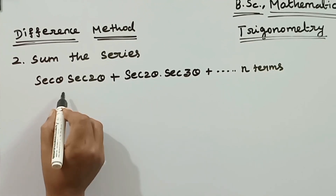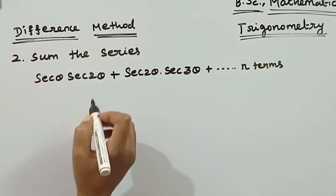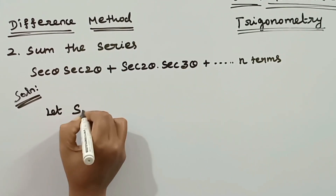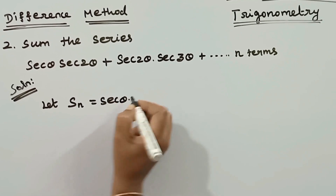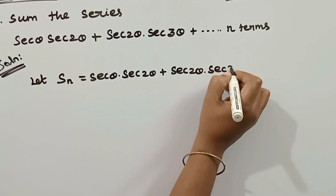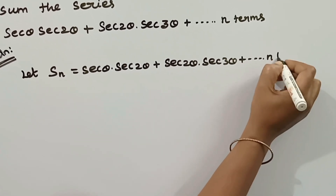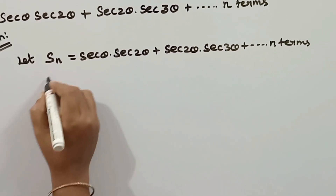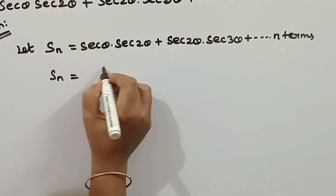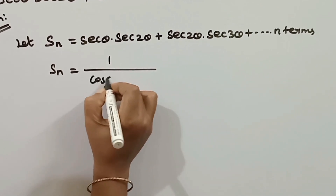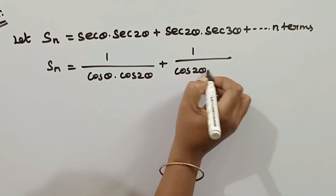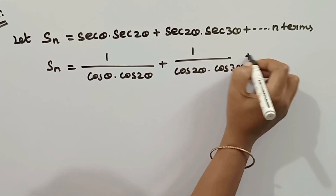We will discuss the second problem and explain the sum of the general term. The series is sec(θ)·sec(2θ) + sec(2θ)·sec(3θ) + ... up to n terms. We note that sec(θ) = 1/cos(θ) and sec(2θ) = 1/cos(2θ), so the first term is 1/[cos(θ)·cos(2θ)] and the second term is 1/[cos(2θ)·cos(3θ)], and so on up to n terms.